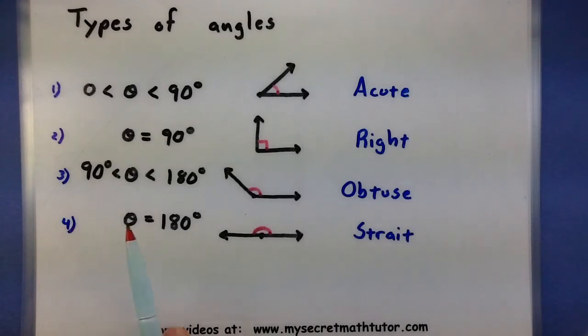If it's between 90 and 180, this is our obtuse angle. And if it's exactly 180 degrees, I call this a straight angle.